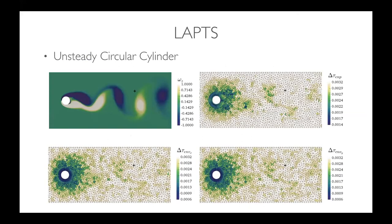For the circular cylinder test case, the plots show the pseudo-time step size for each field variable — x velocity, y velocity, and pressure. The important thing to notice is that the pseudo-time step size varies quite a bit across the domain. In very large elements, like in the wake of the cylinder, there are large pseudo-time step sizes. Near the surface, where the CFL limit is more strict, there are significantly smaller pseudo-time step sizes.